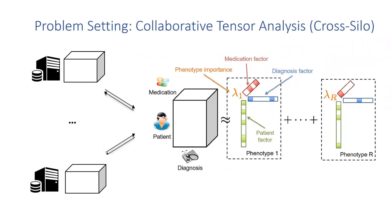The right-hand side shows the result of the commonly used CP factorization for discovering the latent medical concepts or disease subtypes. Each component has a patient factor and two feature mode factors. Intuitively, each component corresponds to a subset of patients with a set of related diseases and medications.